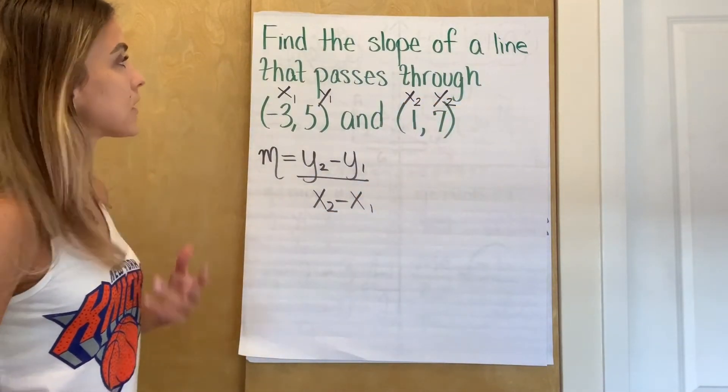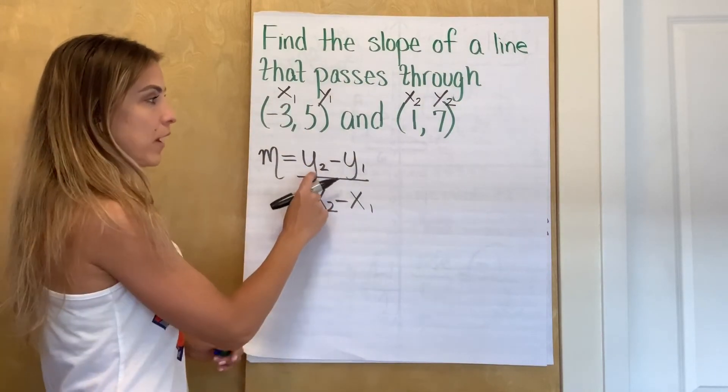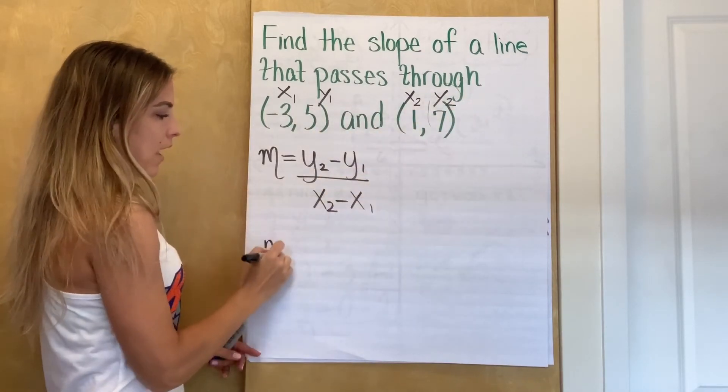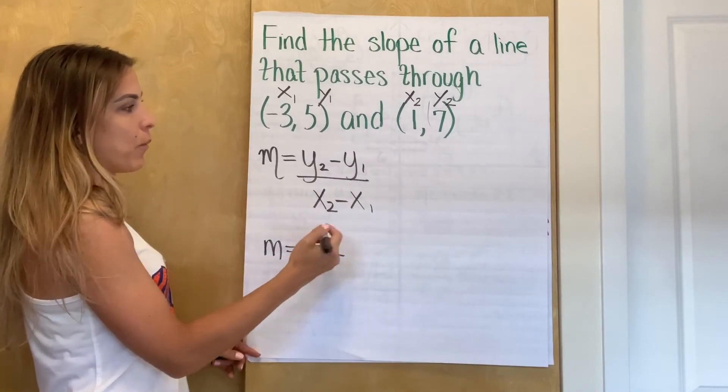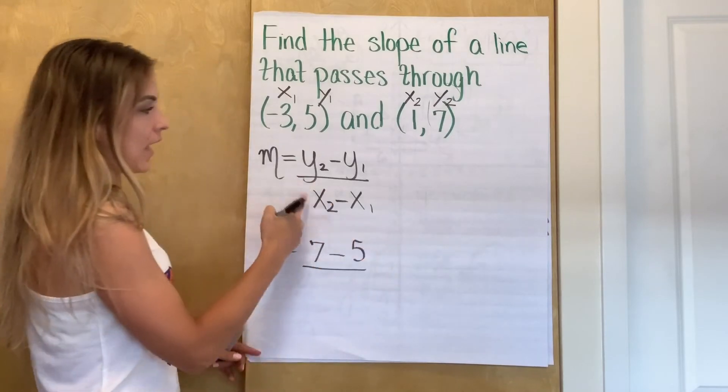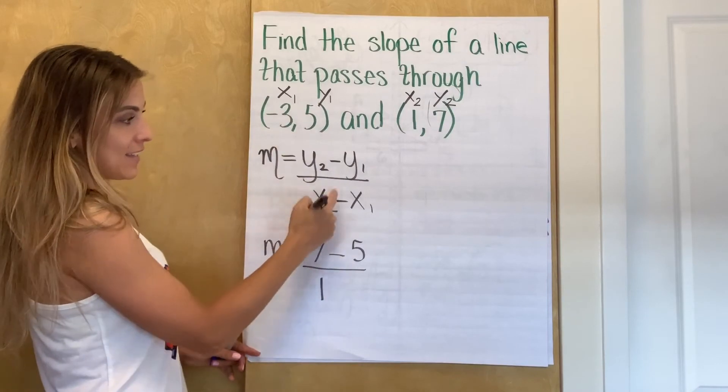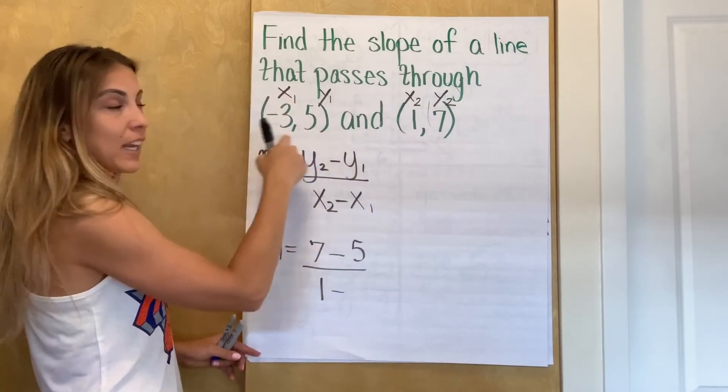So the next step we did was to substitute. So I've labeled and now I'm going to substitute in. So instead of writing y2, I'm going to look for my y2. Here's my y2. It was seven. So I'm going to write m equals seven minus, what's my y1? Five. So seven minus five over x2. So look for your x2. Here it is. One minus x1. Let's look for my x1. Here it is negative three.